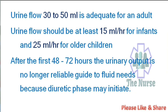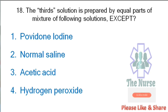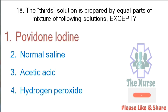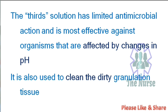Next question: The third solution is prepared by equal parts of a mixture of the following solutions, except — povidone iodine; normal saline; acetic acid; hydrogen peroxide. Correct answer: povidone iodine. The third solution has limited antimicrobial action and is most effective against organisms affected by changes in pH. It is also used to clean dirty granulation tissue.